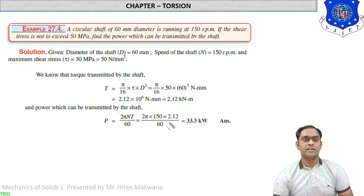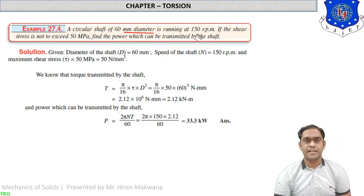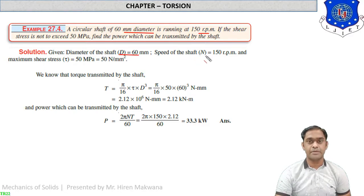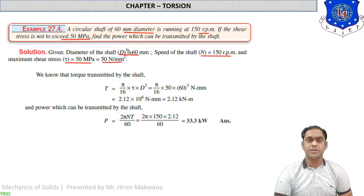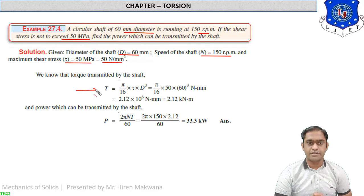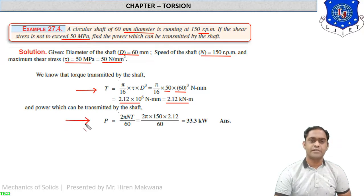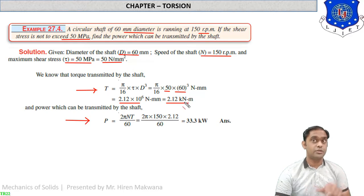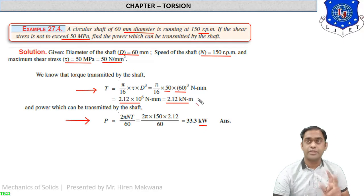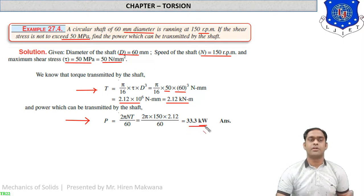Numerical 4: A circular shaft of 60 mm diameter is running at 150 rpm. Shear stress τ is not to exceed 50 MPa. Find the power that can be transmitted. First calculate torque: T = (π/16) × τ × D³ = 2.12 × 10⁶ N·mm = 2.12 kN·m. Then power P = 2πNT/60. With N = 150 and T = 2.12 kN·m, power = 33.3 kW. Note: if torque is in kN·m, power comes out in kW.